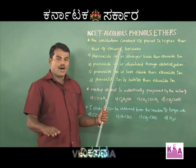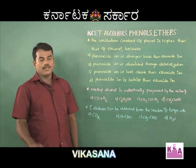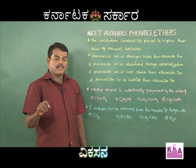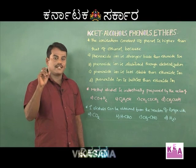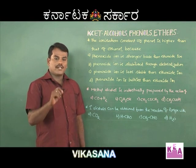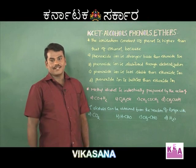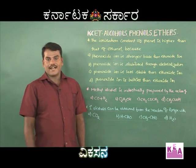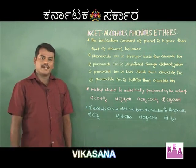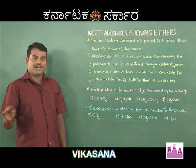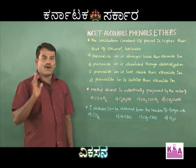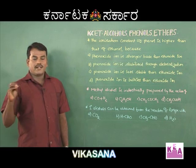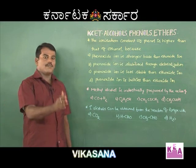Alcohols are less acidic compared to phenols. The dissociation constant Ka of phenol is approximately 10⁻¹⁰, whereas for alcohols it is around 10⁻¹⁶. Higher the Ka value, stronger is the acidic character. Since the Ka of phenol is greater than that of alcohols, phenol is more strongly acidic than alcohols.